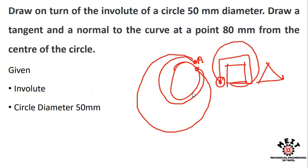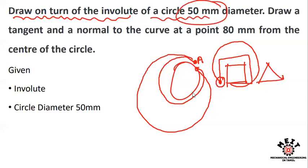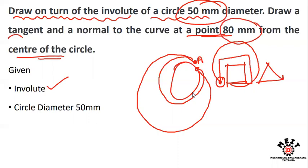How do you make a circle or square? Draw one turn of the involute of a circle of 50mm diameter. Draw the tangent and normal to the curve at a point 80mm from the center of the circle. How do we draw the tangent and normal?